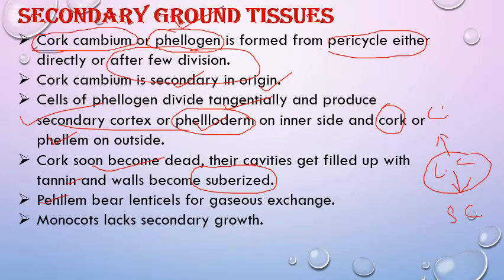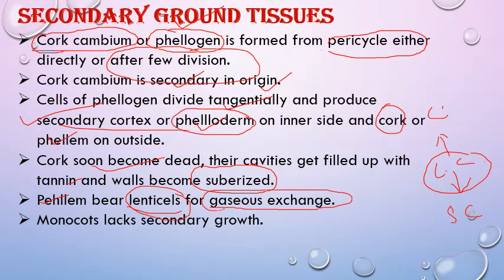In phellem (cork), there are certain areas where cells are loosely arranged. This loose cell arrangement is called lenticels — small pore-like structures present in bark whose function is gaseous exchange. We will discuss lenticels in upcoming slides.